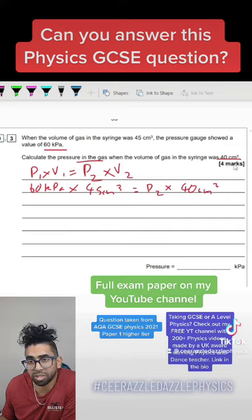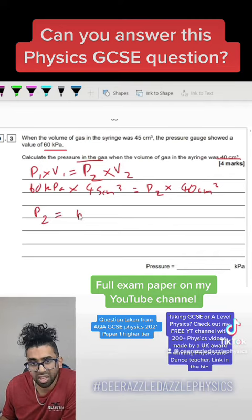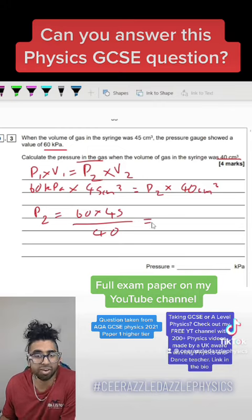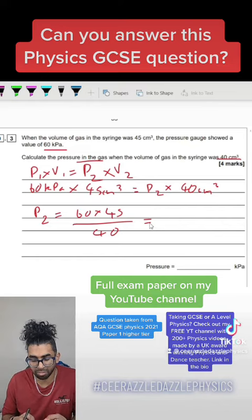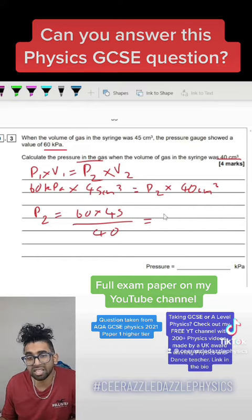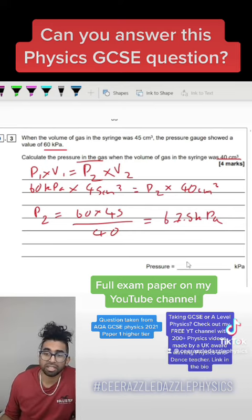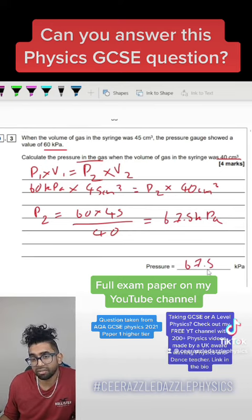Rearranging this, P2 is equal to 60 times by 45 divided by 40, and our answer is going to be the final pressure is going to be 60 times by 45 divided by 40, which is going to be 67.5 kilopascals.